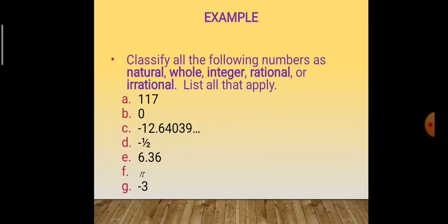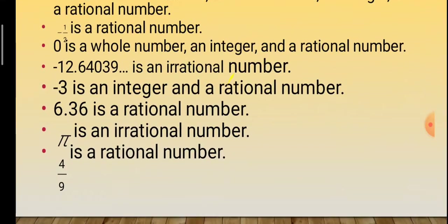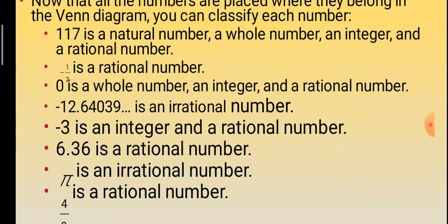Let us work through a few examples. We have to classify the following numbers as natural, whole, integer, rational, or irrational — list all that apply. First: 117. It is a natural number, a whole number, an integer, and also a rational number. Next: -1/2. It is a rational number. Next: zero. Zero is a whole number, an integer, and a rational number. Next: -12.64039... It is an irrational number.